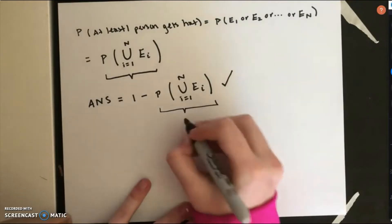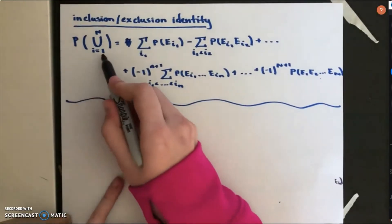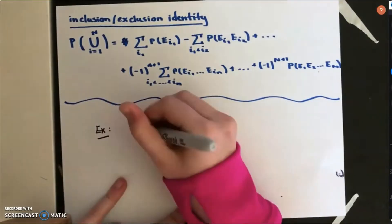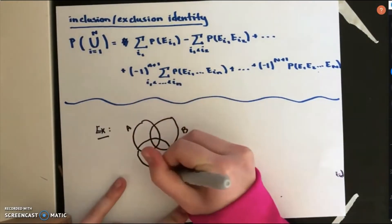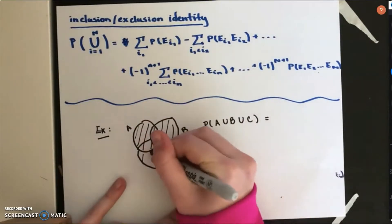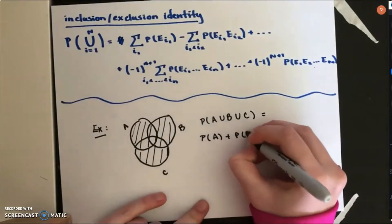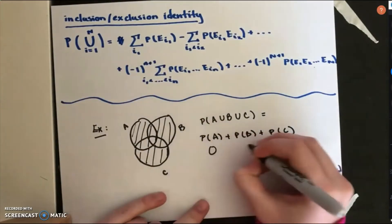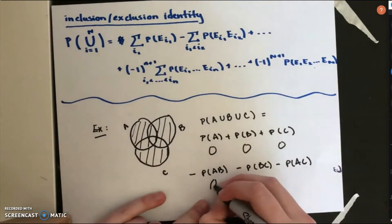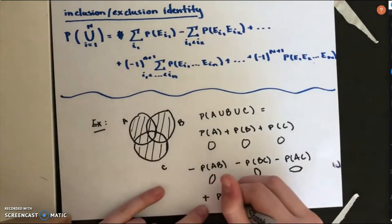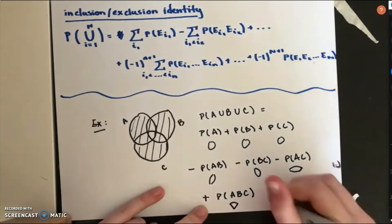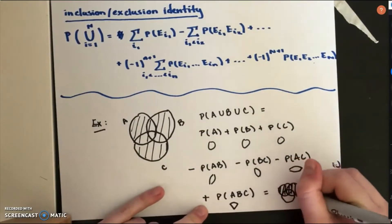One technique for finding this quantity is to use the inclusion-exclusion identity. To illustrate with an example, take the union of three events A, B, and C. The probability of A or B or C — essentially the shaded region — is the probability of A plus B plus C (the entire circles), minus the intersections of A and B, B and C, and A and C (the leaf-like shapes), plus the triangular center region, the intersection of A, B, and C, which sums to the area of the shaded region.